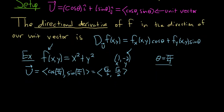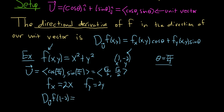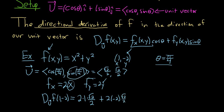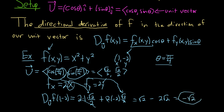Now we just use the formula. The partial of f with respect to x is 2x — you treat y as a constant. The partial of f with respect to y is 2y — you treat x as a constant. So the directional derivative at (1, -2) is: fx(1, -2) × (√2/2) + fy(1, -2) × (√2/2), which equals 2(1)(√2/2) + 2(-2)(√2/2). These terms simplify: we get √2 minus 2√2, which gives us -√2. That is the final answer.